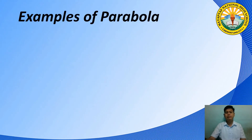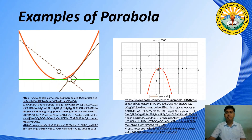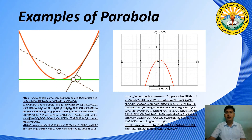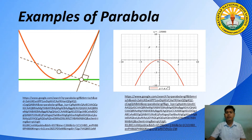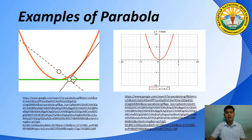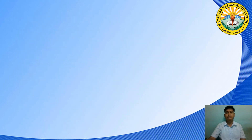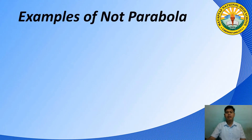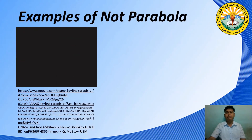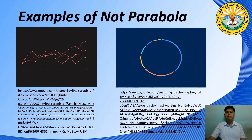Here are examples of quadratic functions: a parabola that opens upward and a parabola that opens downward. Note that a quadratic function does not open to the left or to the right. Here are examples of non-parabolic shapes: a line and a circle.